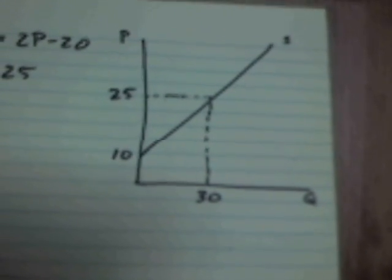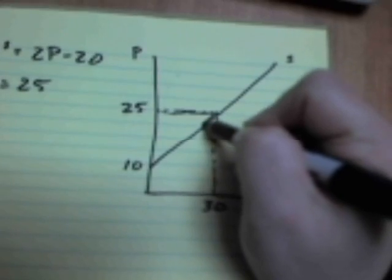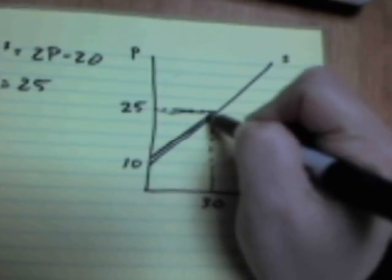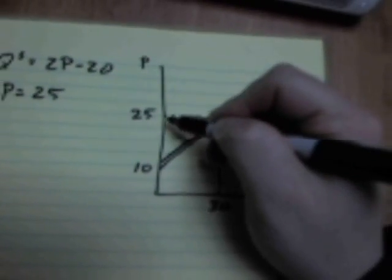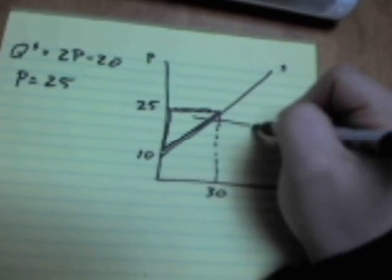What we're after is producer surplus, which is for each of these 30 units that they're selling, it's the difference between what they would be willing to take, which is along the supply curve, and the price they actually get, which is 25. So graphically, it's the area of a triangle.